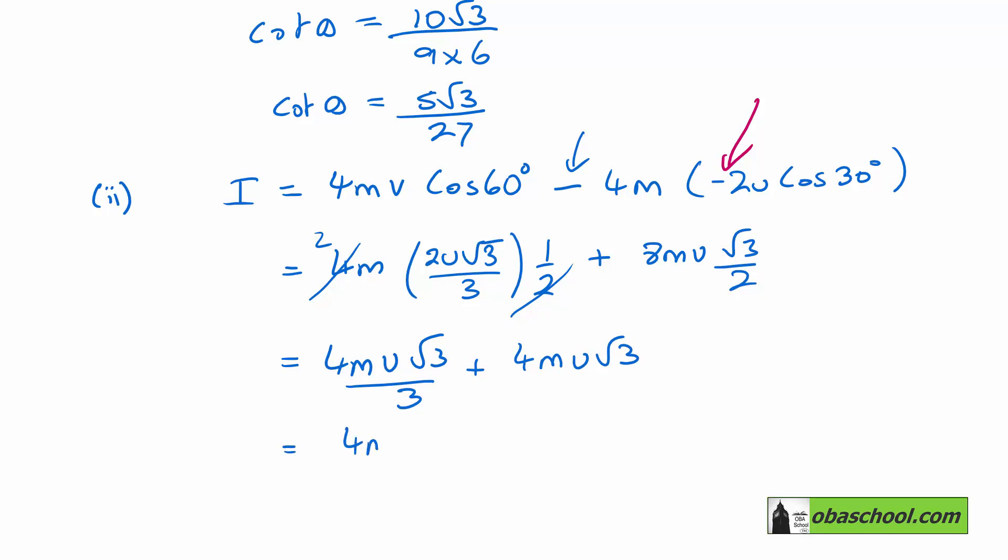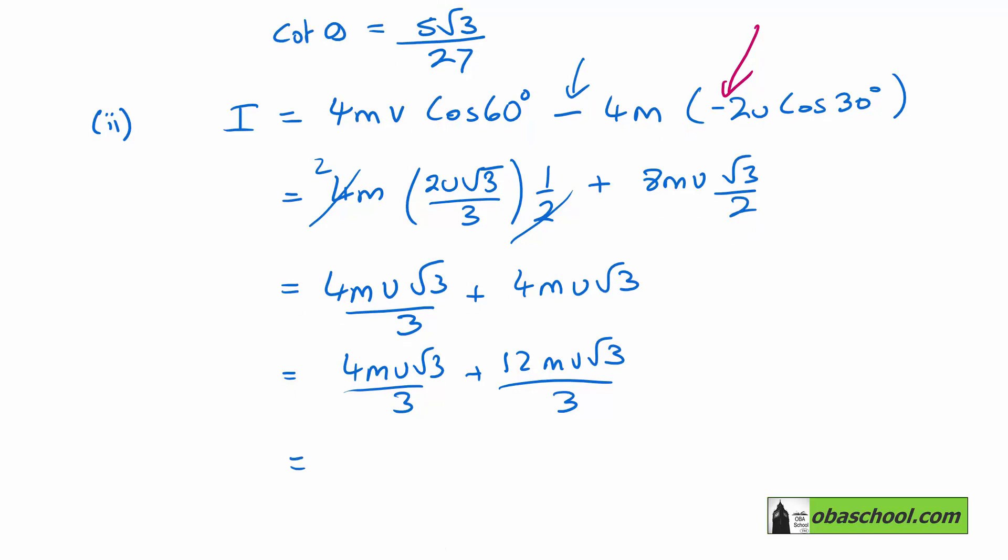And we're going to have plus 4M U root 3. Which gives me 4M U root 3 on 3. Plus 12M U root 3 on 3. Giving me 16M U root 3 on 3. That is the magnitude of the impulse.